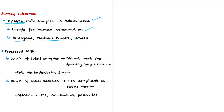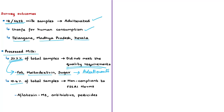A key finding was that processed milk, including that of major brands, failed to meet prescribed quality norms — 37.7 percent of total samples did not meet quality requirements due to the presence of adulterants such as fats, maltodextrin, and sugar above permissible limits. Additionally, 10.4 percent of processed milk samples were non-compliant with FSSAI norms on contaminants like aflatoxin M1, antibiotics, and pesticides.